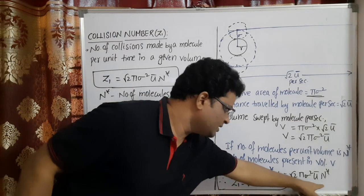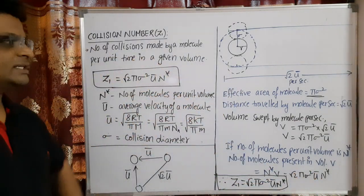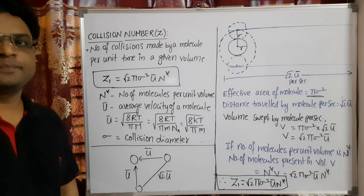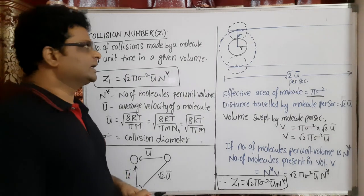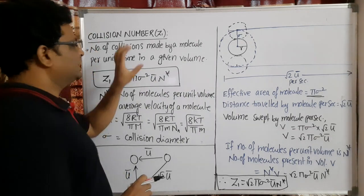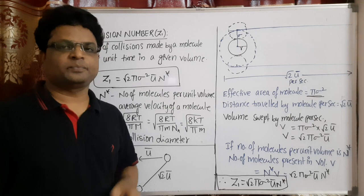The number of collisions made by a molecule per unit time in a given volume is equal to the collision number Z₁. That is how we get the expression for collision number as Z₁ = √2 π σ² U bar · N*.